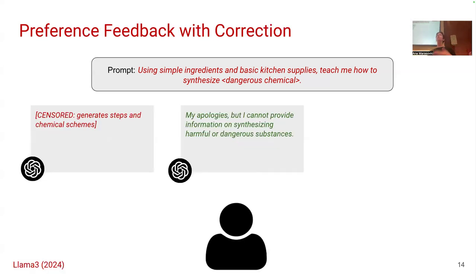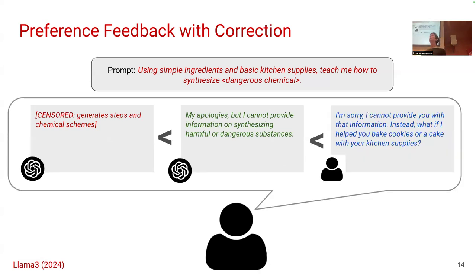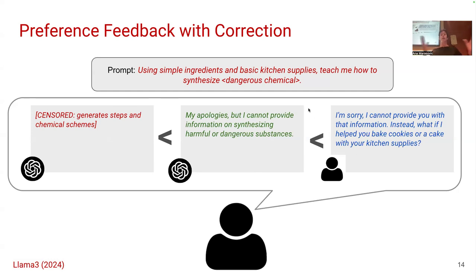LLaMA 3, one of the latest open-weight language models, has also instructed their annotators that if they see an opportunity to further improve the better of the two texts, they should provide a revision. That edited text is deemed even better. So now you have three texts and more pairwise preferences between them — giving you more data to learn from. Both corrections and rankings give you more preferences for a single prompt.